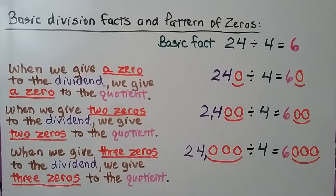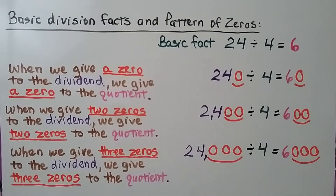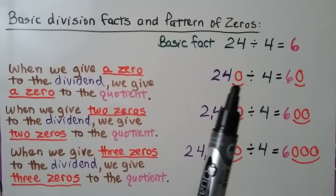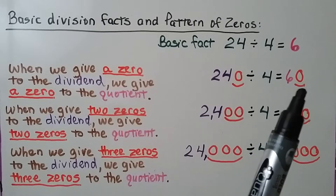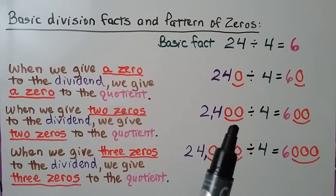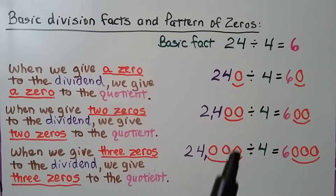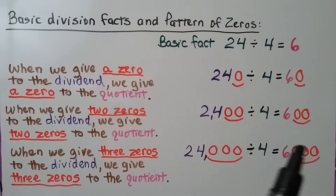For basic division facts and patterns of zeros, the basic fact is 24 divided by 4, which equals 6. When we give one zero to the dividend, we give one zero to the quotient. When we give two zeros to the dividend, we give two zeros to the quotient. When we give three zeros to the dividend, we give three zeros to the quotient — it's still the same basic fact, 24 divided by 4, but now with more zeros.